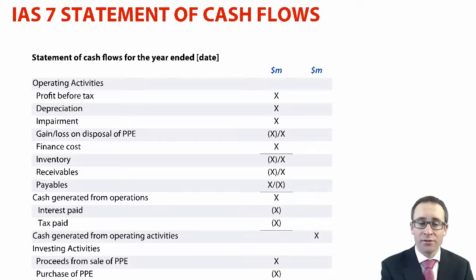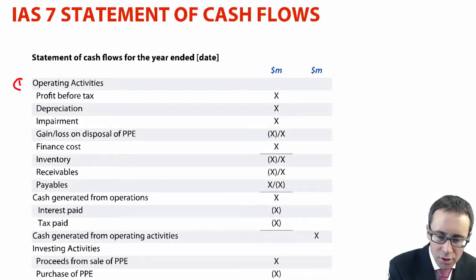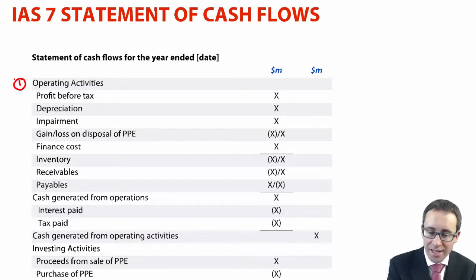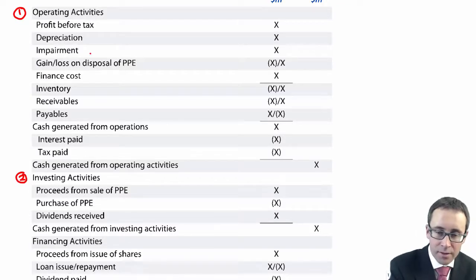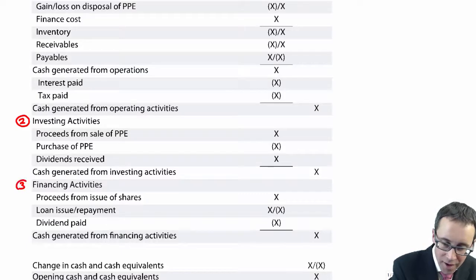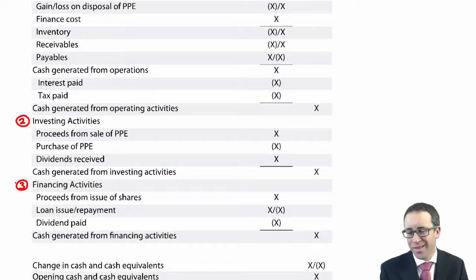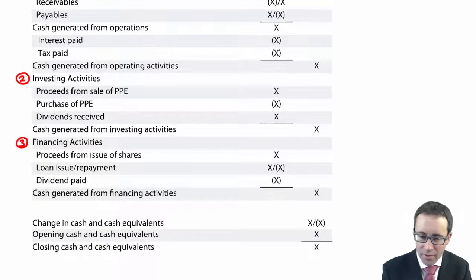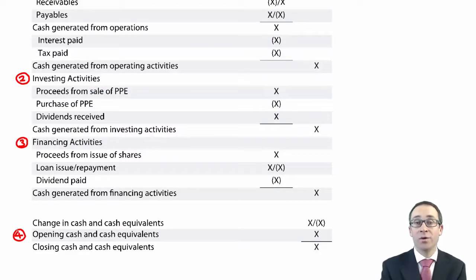Remember, the statements of cash flows is split. Some people say three. I say four. Because the three relate to your operating activities, so your day-to-day activities. You've then got your cash flows from your investing. And as well as your investing, so that's buying and selling non-current assets, you also have your financing. So, the cash that's raised from issuing shares, from issuing debt and repaying debt. So, that's the three. The fourth one I sort of speak about in terms of areas is the one at the bottom, whereby you look at the movement in your cash and your cash equivalents.